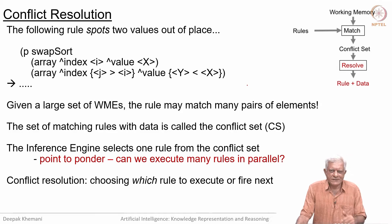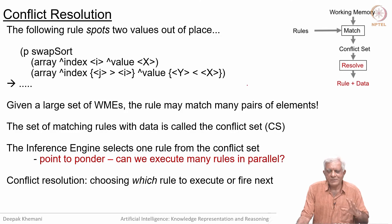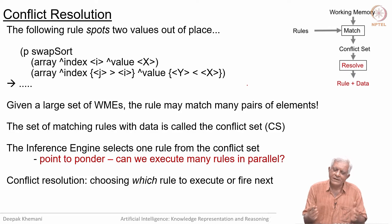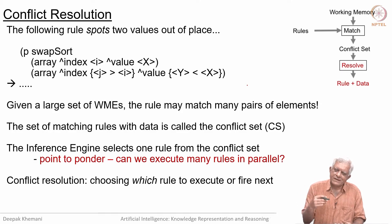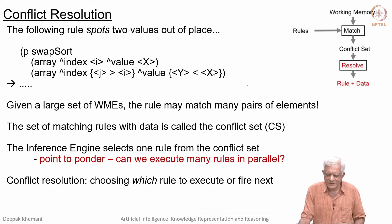Welcome back. We have been looking at the structure of an inference engine for a forward chaining production system. We have looked at the notion of working memory, working memory elements, and rules. Given the set of rules and the set of working memory elements, the match phase of the algorithm will produce a conflict set — a set of all matching rule instances with the matching data. The task of deciding which of those instances should be executed next is called the conflict resolution task. Let us see what strategies we can implement for conflict resolution.